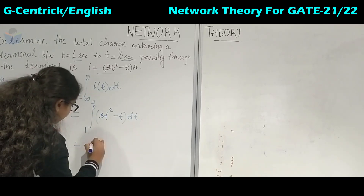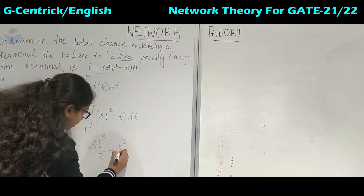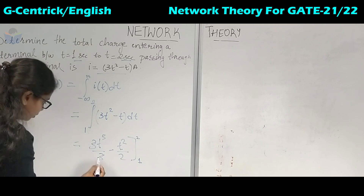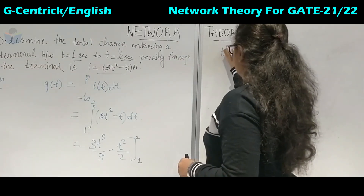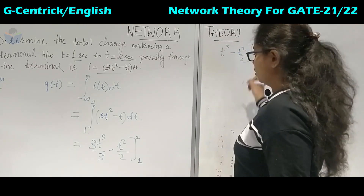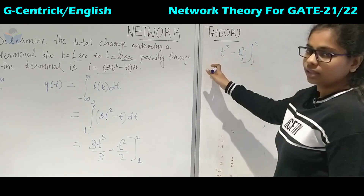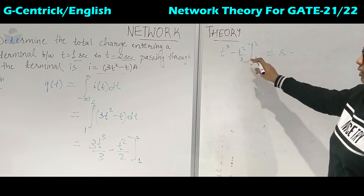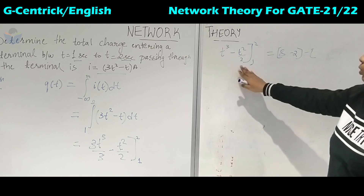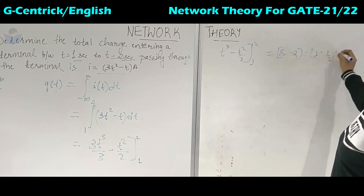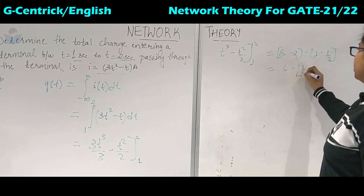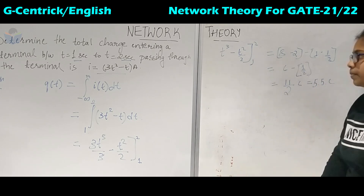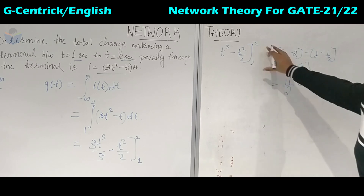Substituting i = 3t² − t and integrating from 1 to 2, we get [3t³/3 − t²/2] from 1 to 2. The 3s cancel, giving [t³ − t²/2] from 1 to 2. Substituting the upper limit: 2³ = 8, minus 2²/2 = 2, giving 8 − 2 = 6. Substituting the lower limit: 1³ − 1/2. After solving, the result is 11/2, which is 5.5 coulombs — the total charge present between t = 1 and t = 2 seconds.